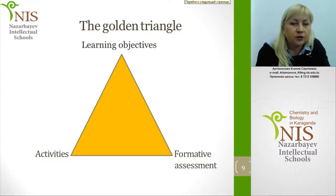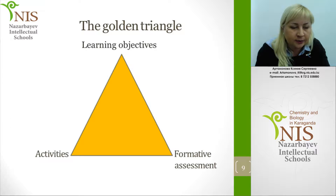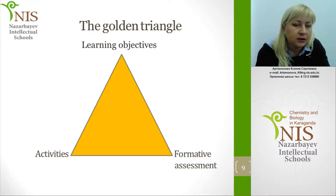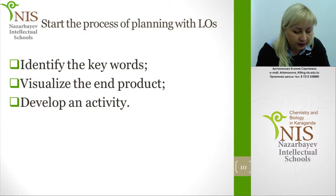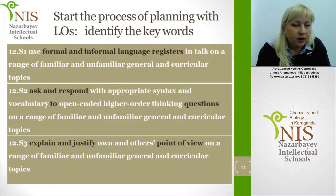Another useful technique is the golden triangle, which helps perceive the planning process as a cycle. It begins with learning objectives, then proceeds to formative assessment, and only then to activities — but it remains a cycle. After planning activities, we may return to learning objectives and consider the whole process again. To deal with learning objectives, I suggest three techniques: identify the keywords, visualize the end product, and develop an activity. In grade 12 there are seven speaking objectives.